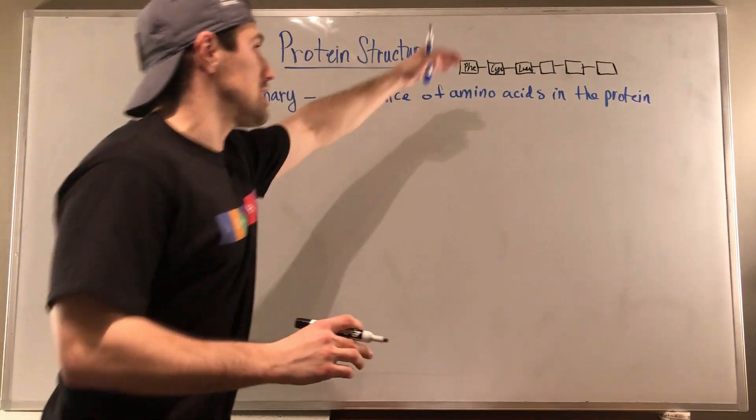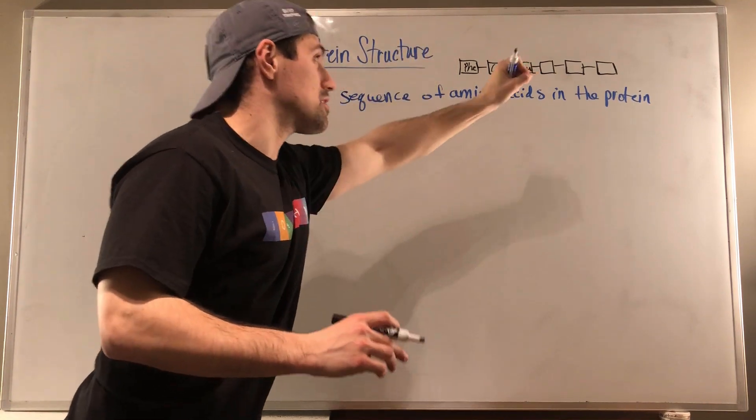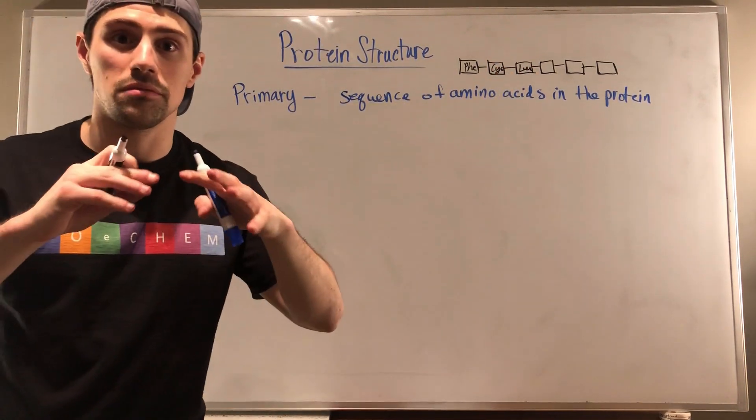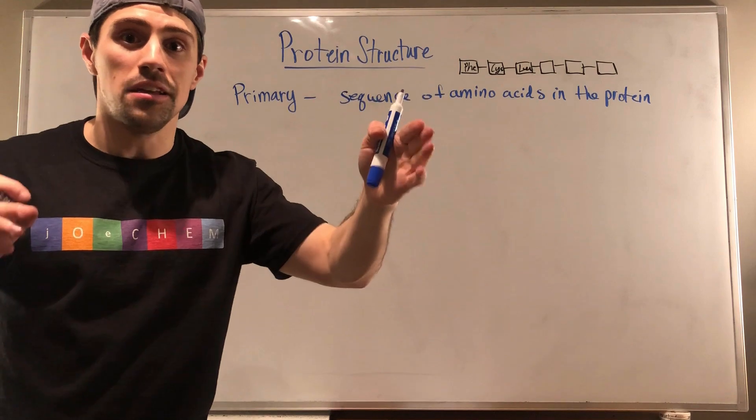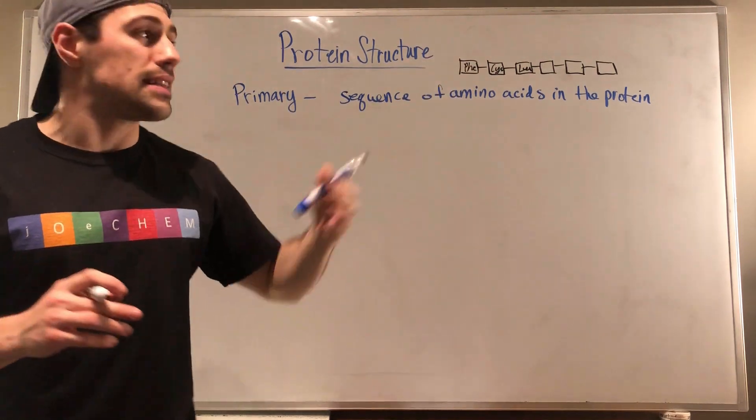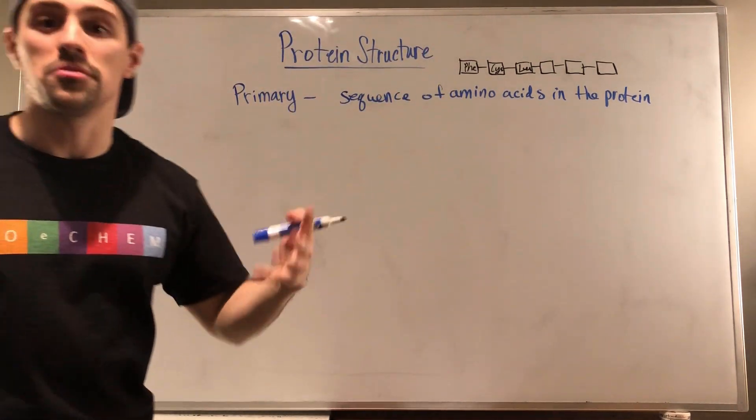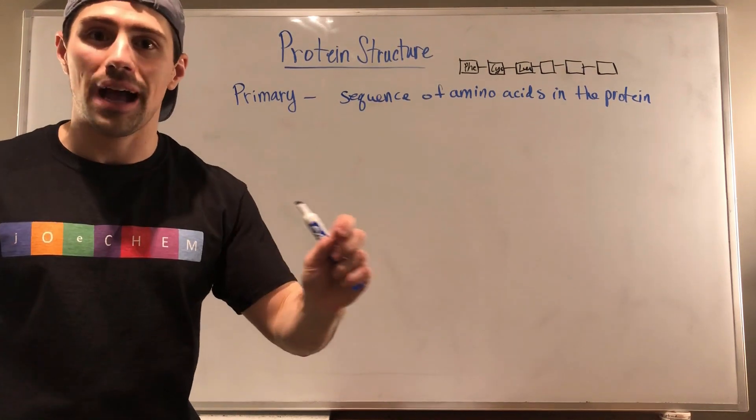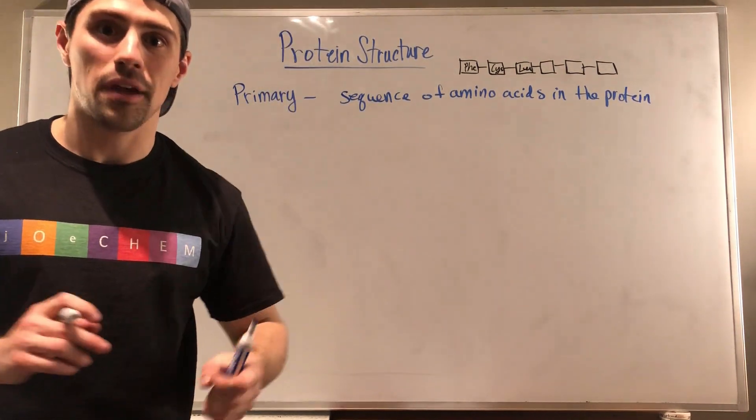If a protein has something different than that order of boxes, whether it's A, B, and C or C, B, A, that is what a protein's primary structure is. Just what amino acids are involved and what order are they in?